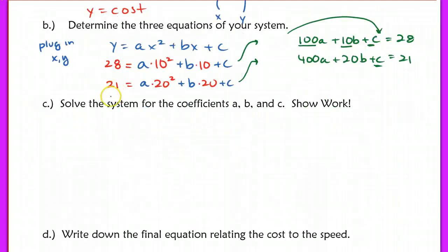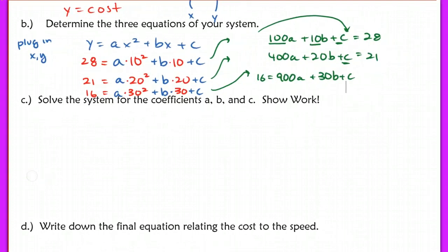Simplifying this equation, I end up with 21 equals 400a, 20 squared is 400a, plus 20b plus c. And the very last equation is going to come by plugging in 30 and 16. So now I have 16 equals a times 30 squared plus b times 30 plus c.